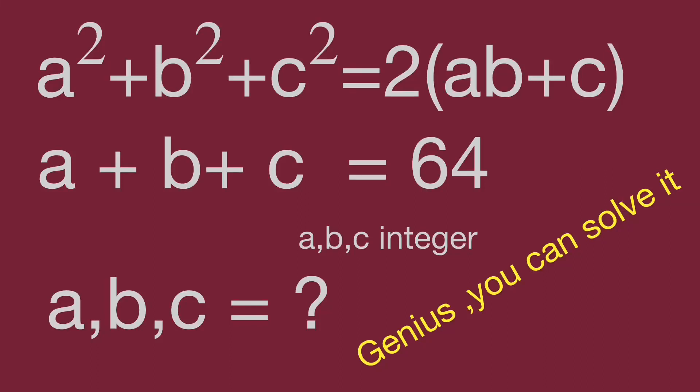Hello, you are watching Bala Hippo Maths Genius Riddles. We have two equations: a² + b² + c² = 2(ab + c) and a + b + c = 64.